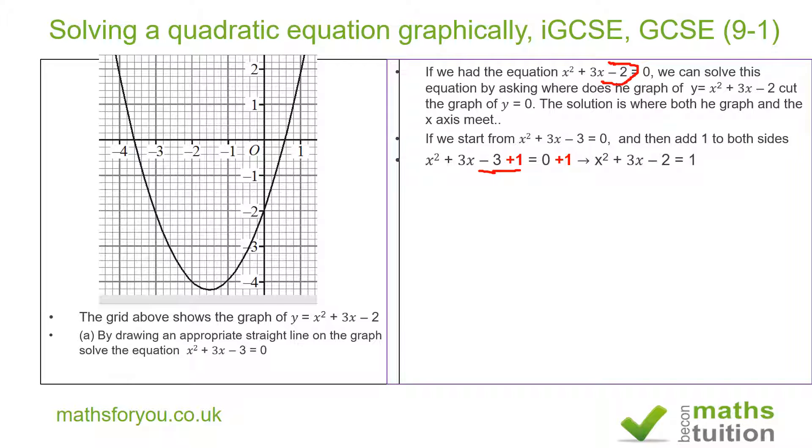And because we added 1 to the left hand side, we must also add 1 to the right hand side. So we end up with x squared plus 3x minus 2 is equal to 1. So now we've already got our graph of x squared plus 3x minus 2. All we need to do now is to draw the graph of y is equal to 1. And the graph of y is equal to 1 is this one here.